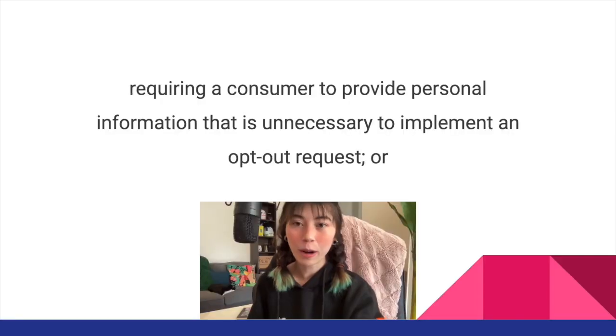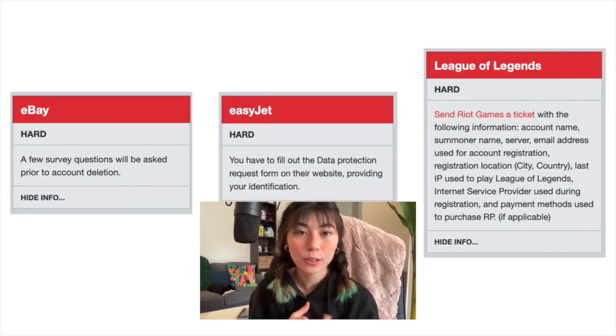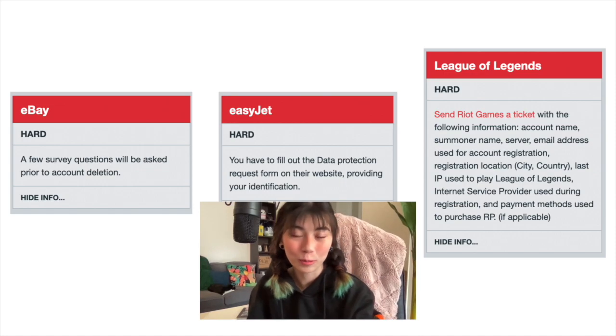Back to the CCPA regulations: the next one is requiring a consumer to provide personal information that is unnecessary to implement an opt-out request. From the Just Delete Me examples, we have things like answering survey questions before you can submit your request, providing personal identification, or sending your IP address and internet service provider information to League of Legends before closing your account. Aside from that, just make it as easy to stop being tracked by large companies as it is to start being tracked.